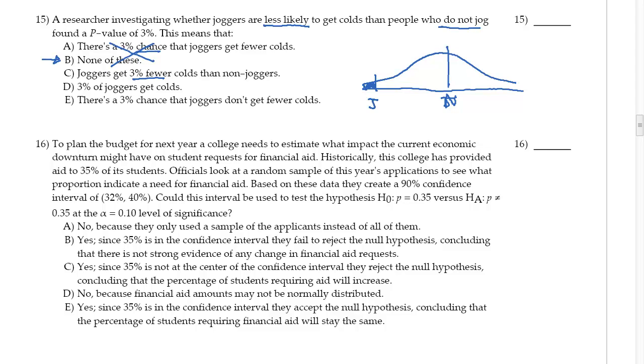Okay, if I put an X through all of them: joggers get 3% fewer colds—there is a comparison there, but it's a chance, not an actual number. 3% of joggers get colds—well, that's an odds but it's not compared to the non-joggers.